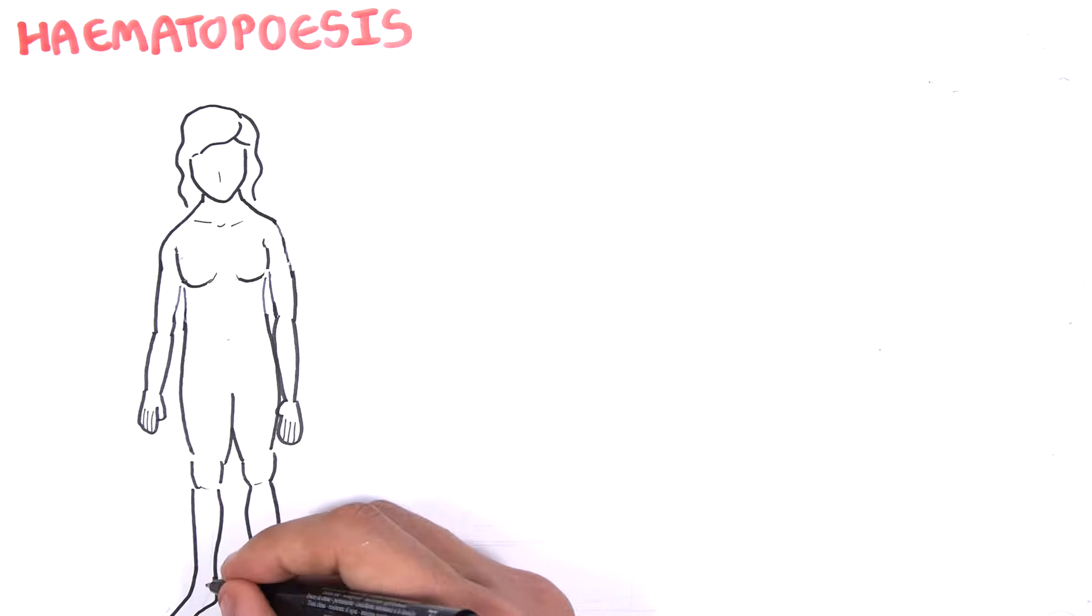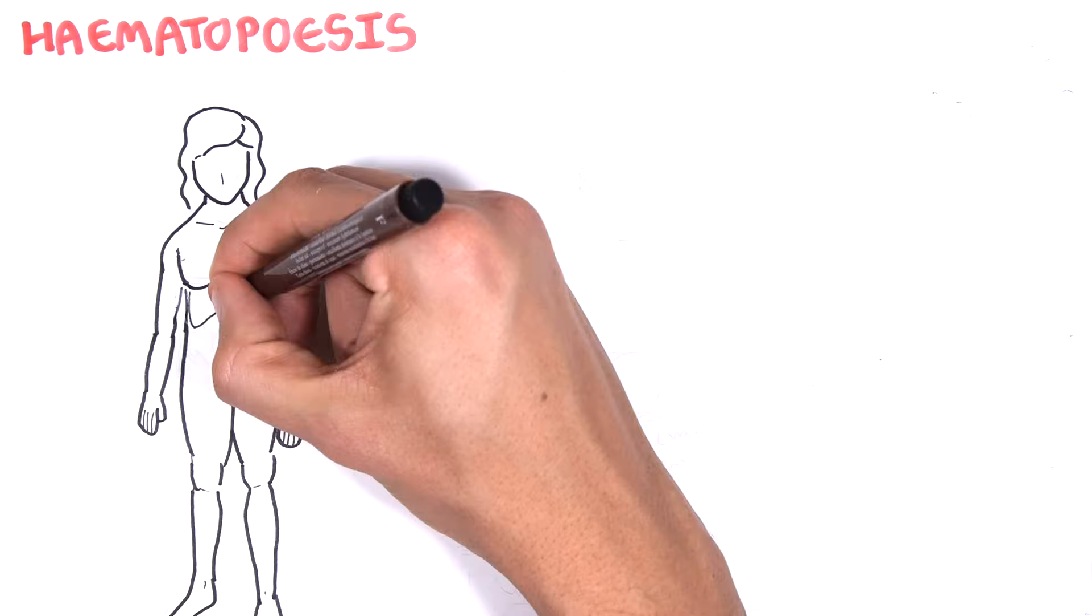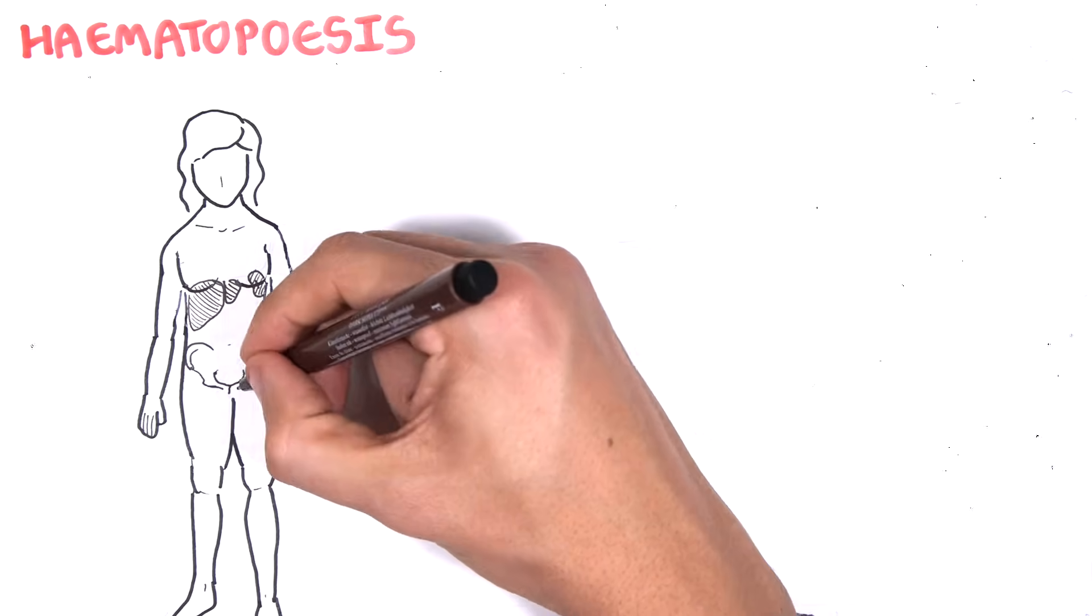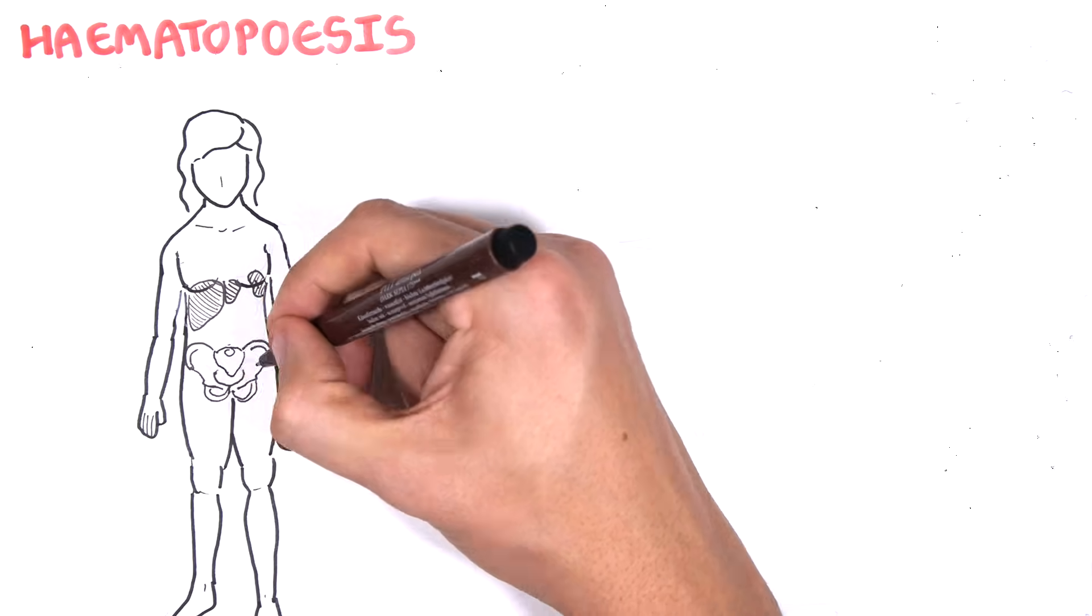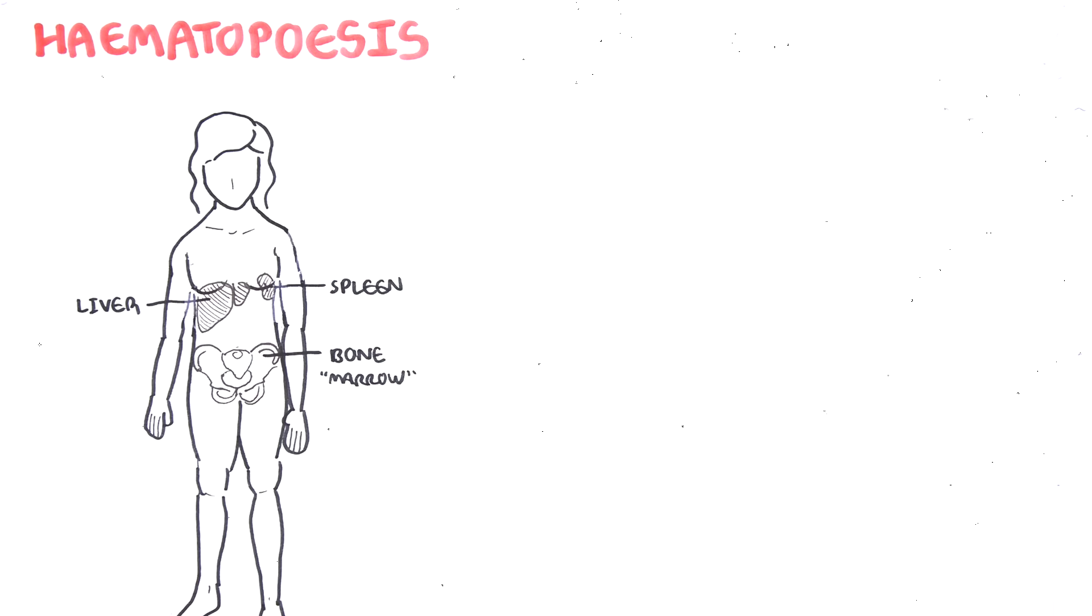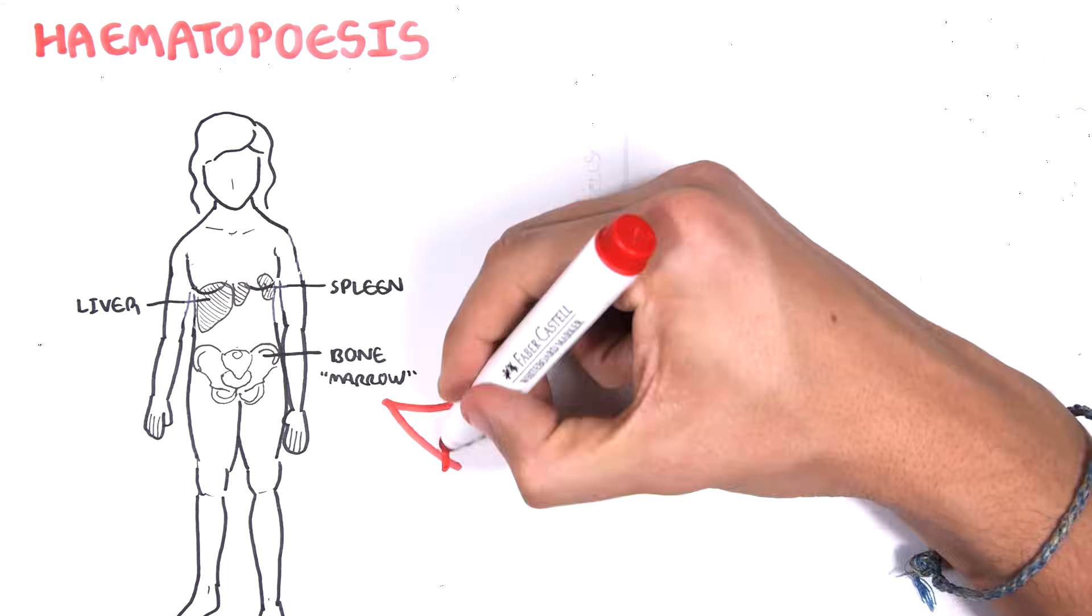Now, hematopoiesis, which is the making of these different cells, occurs mainly in the bone marrow, and this is particularly in adults. This is referred to as medullary hematopoiesis. But hematopoiesis can also occur in other tissues, such as the liver, thymus, and spleen. This is called extra-medullary hematopoiesis, and we'll learn about that in this video.